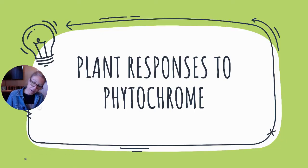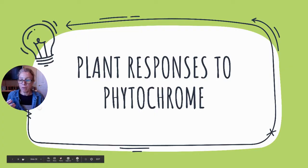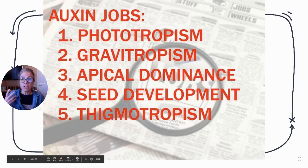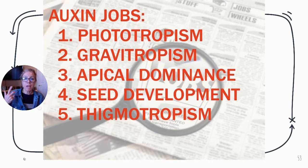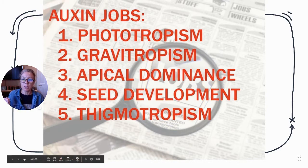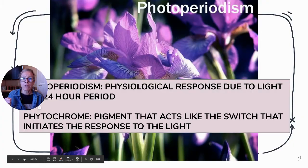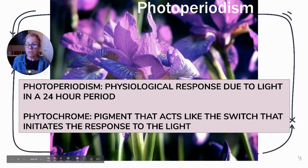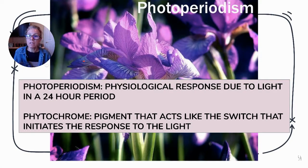Our last topic for this chapter is plant responses with phytochrome. Recall that auxin's roles include phototropism, gravitropism, apical dominance, seed development, and thigmotropism. Now, photoperiodism: plants are aware of light — they can sense the time of day, the amount of light, and adjust metabolic processes such as photosynthesis. They can also sense the time of year, affecting seasonal responses such as flowering.